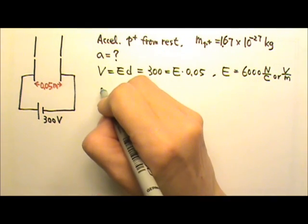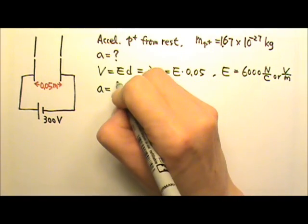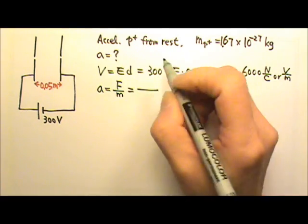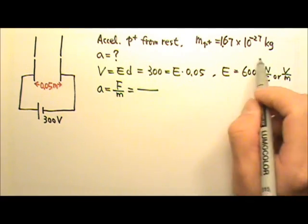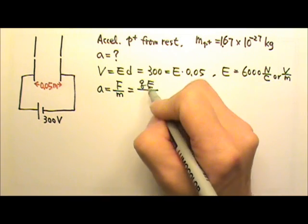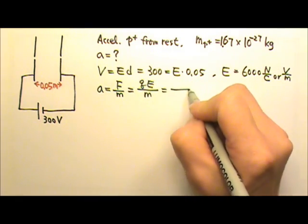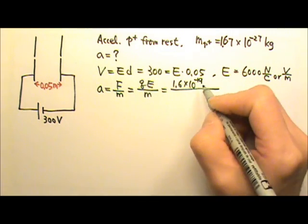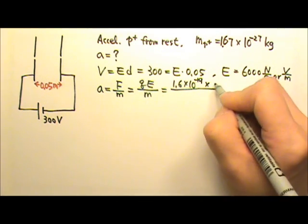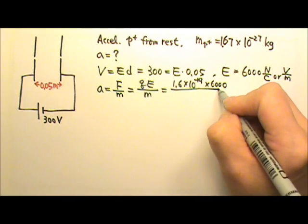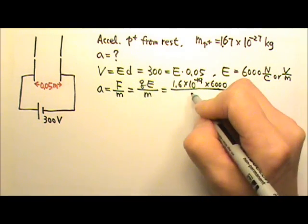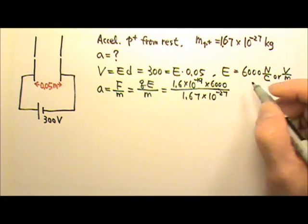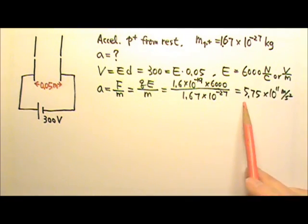And then to find the acceleration, we can use F equals to MA. So force divided by the mass gives us the acceleration. If we put a charge in an electric field, we can use F equals to QE to find the force. And the charge is 1.6 times 10 to the negative 19th coulomb, the elementary charge. The electric field, we just found it is 6,000. And the mass of a proton is 1.67 times 10 to the negative 27th. So this will give us this much acceleration.